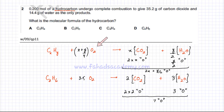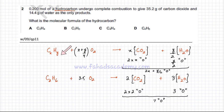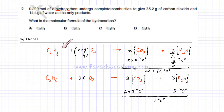Now we have a balanced equation in terms of X and Y: CxHy reacting with (X + Y/4) O2 gives X CO2 molecules and Y/2 H2O molecules. Remember this equation — whenever you have the combustion of an unknown hydrocarbon CxHy, this is the balanced combustion equation. We don't know how many carbons or hydrogens there are, so this is expressed in terms of X and Y.